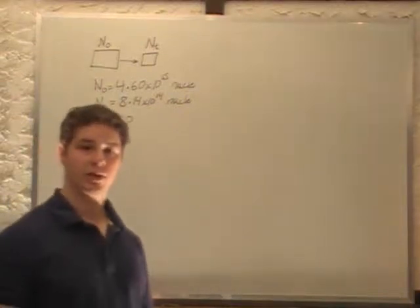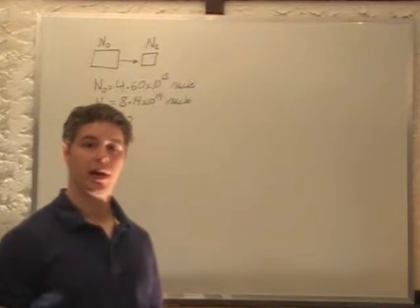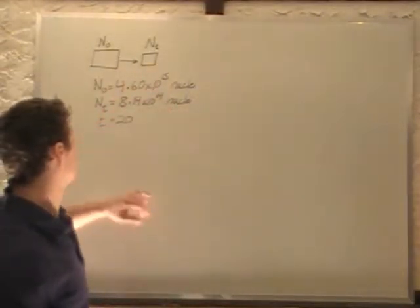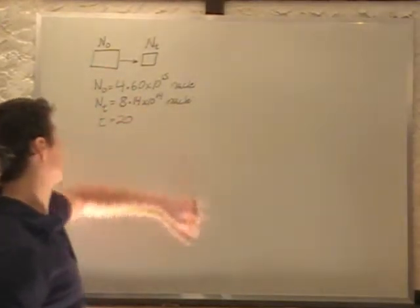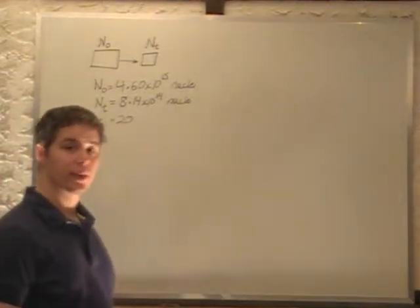In this problem we have a certain amount of radioactive nuclei at the beginning of an experiment, and we have some decay going on and a final amount. We start with 4.6 times 10 to the 15 nuclei and end with 8.14 times 10 to the 14 nuclei after 20 days. We want to find out what the half-life is.